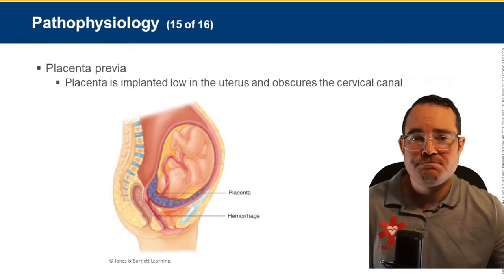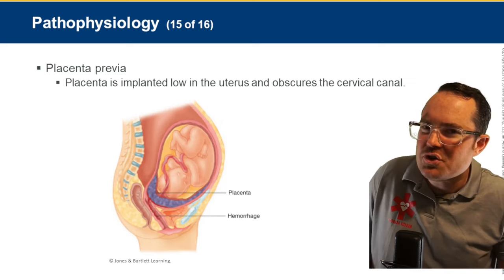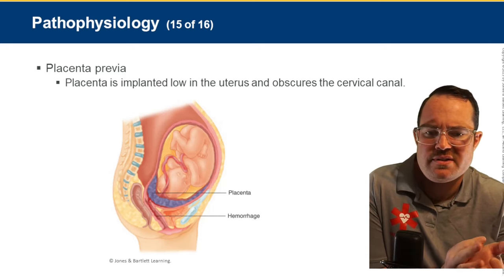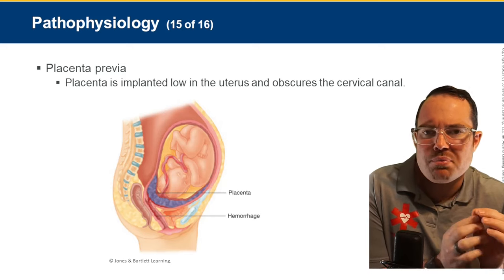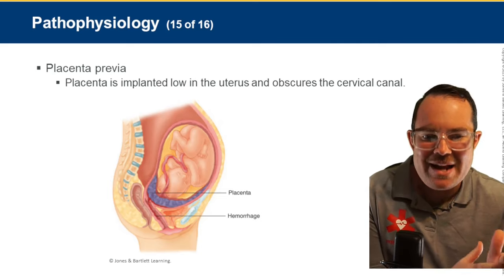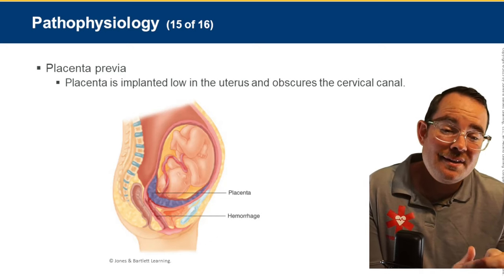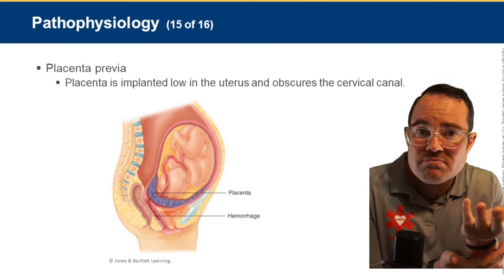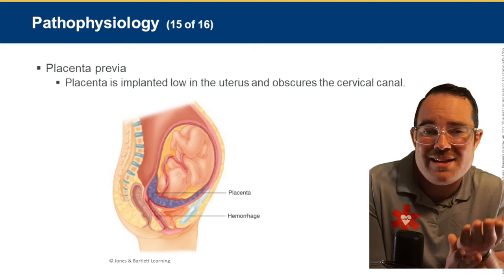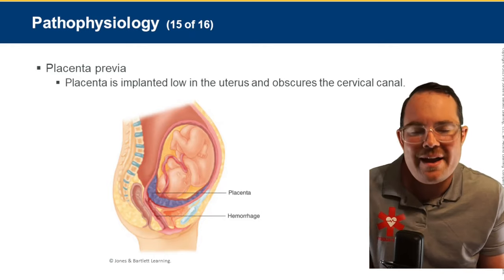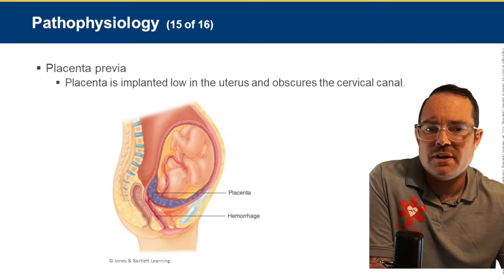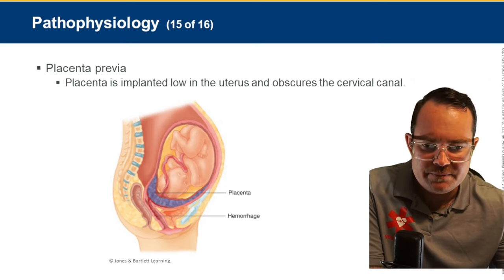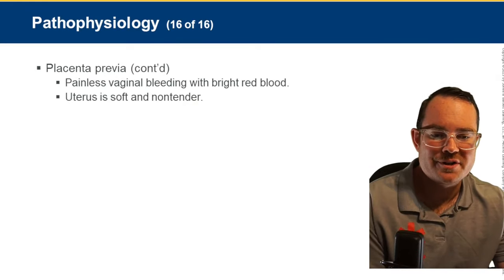Placenta previa is when the placenta grows over the cervix, covering it, and causes bright red, painless bleeding. It becomes an emergency when delivery is imminent because the baby cannot pass through the blocked cervix. If caught early with minimal bleeding and no pain, it can be managed at the hospital. Signs of internal hemorrhage include orthostatic vital sign changes, Grey Turner's sign (bruising in the flanks), and Cullen's sign (bruising around the umbilicus).